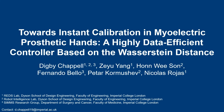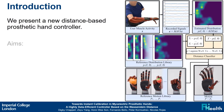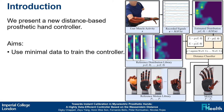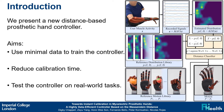Towards instant calibration in myoelectric prosthetic hands: a highly data-efficient controller based on the Wasserstein distance. We present a new distance-based prosthetic hand controller. Our aims are to use minimal data to train the controller, reduce user calibration time, and test the controller on real-world tasks.